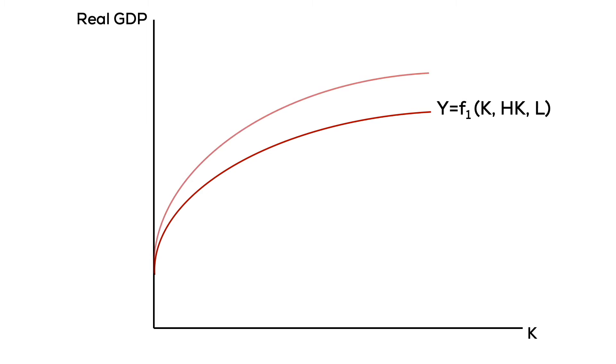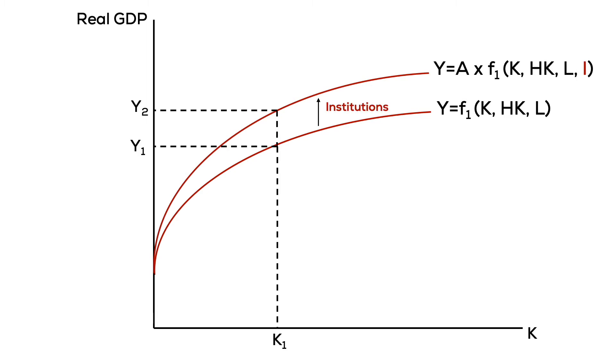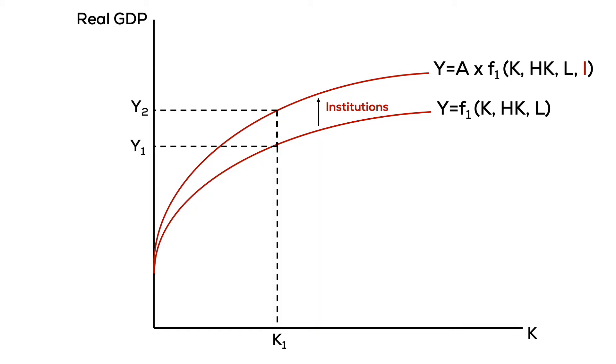An economy that invests in developing healthy institutions will allow for endogenous growth. Graphically, our production function increases by implementing policies, private property rights, and enhancing the decision-making process for citizens. They now have the incentive to create their own technology and become reliant on developing new ideas and productivity. We increase output from Y1 to Y2 by holding capital constant. This is actually a cheaper method to spur economic growth — the economy has the same capital but uses it more efficiently and produces more.